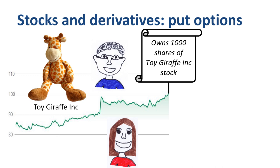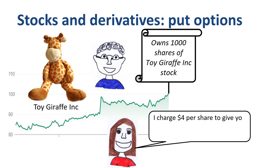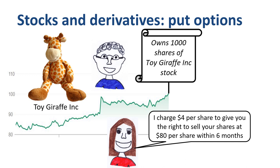John is worried that the share price of Toy Giraffe Inc. might drop — not so worried that he immediately sells his entire portfolio, but looking to get some insurance against a very big drop in the share price. Jane has a solution. For $4 per share, she will give him the right to sell his shares to her at $80 per share within six months. If John and Jane agree on that transaction, then they have just entered into a derivative contract. The value of the put option depends on — is derived from — the value of the shares during the next six months.